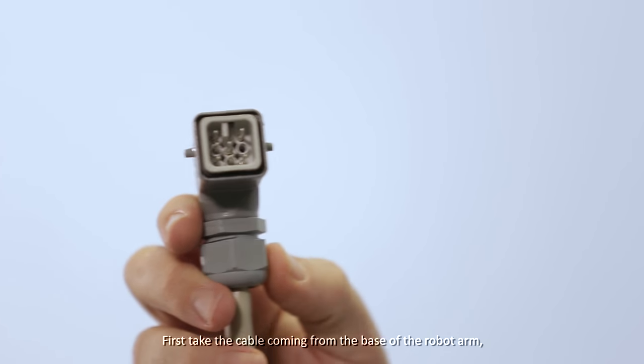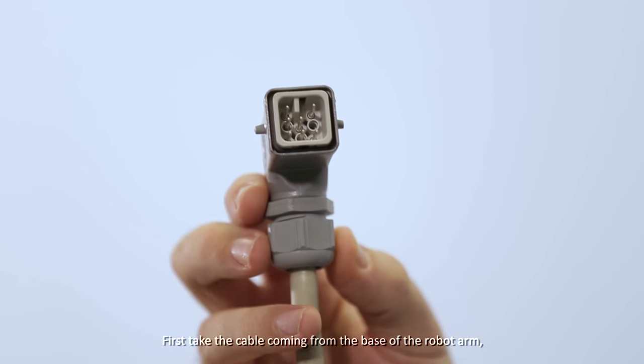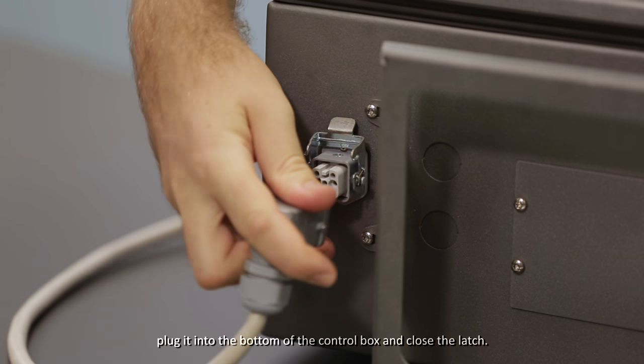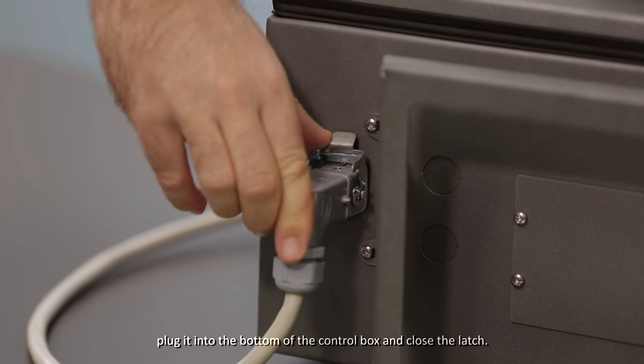First, take the cable coming from the base of the robot arm, plug it into the bottom of the control box, and close the latch.